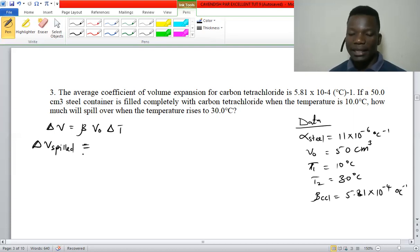subtracting the volume of the steel container. So we have volume of carbon tetrachloride minus the volume of the steel container, and that will give us the volume of the spilled carbon tetrachloride.